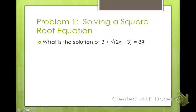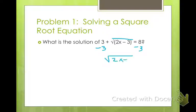What is the solution of 3 plus the square root of 2x minus 3 equals 8? If we wanted to solve this, the first thing we need to do is get the square root part by itself so that we can square both sides, and then solve from there. So I'm going to subtract 3 from both sides, giving me the square root of 2x minus 3 equals 5.